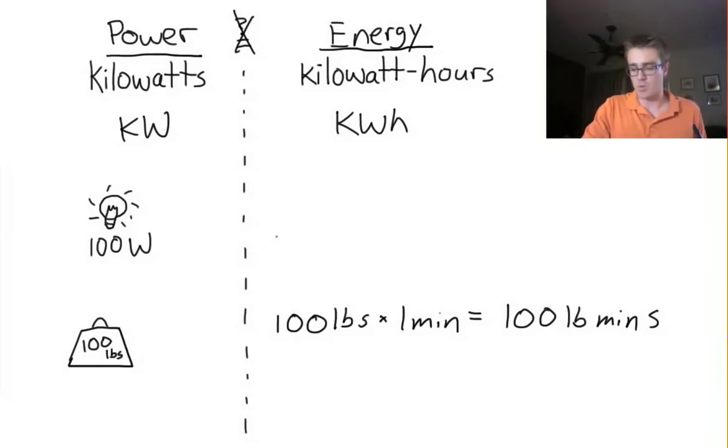Likewise, if we want to power the 100-watt light bulb for a certain amount of time, we need a certain amount of energy. Let's say we want to power our 100-watt light bulb for a full hour. In order to do this, we would need 100 watt-hours of energy.